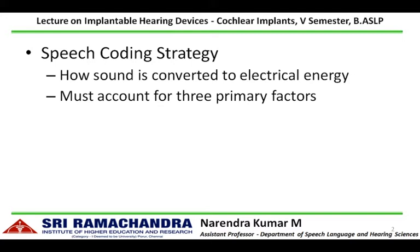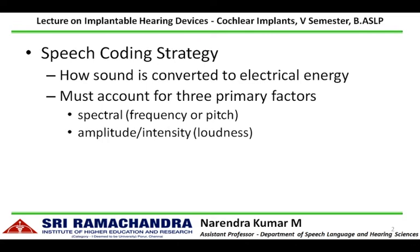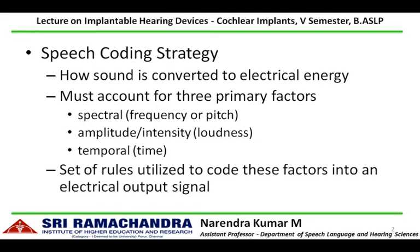The processed signal is given to the electrode array to stimulate the auditory nerves in the cochlea. This information must account for three primary factors of the incoming signal: the spectral information, which includes the frequency composition; the amplitude or intensity, which contributes to loudness perception; and the temporal information, which is the time-varying component showing how the signal varies across time. The set of rules used to code these factors into an electrical output signal is called a speech coding strategy, which is an algorithm stored in the speech processor.